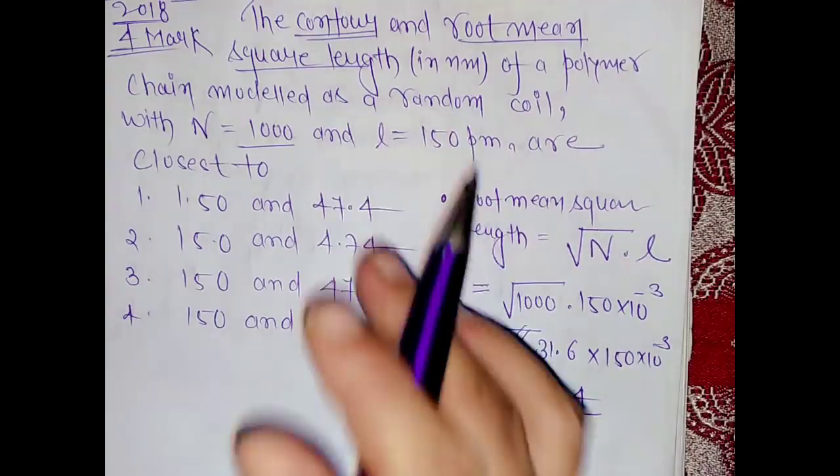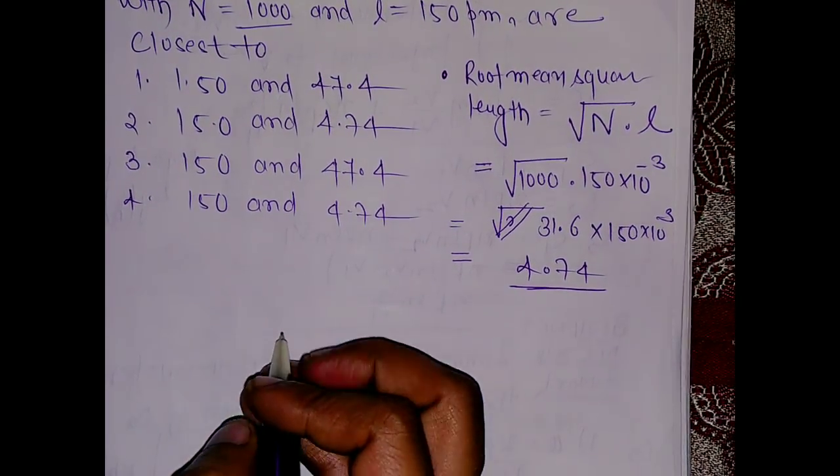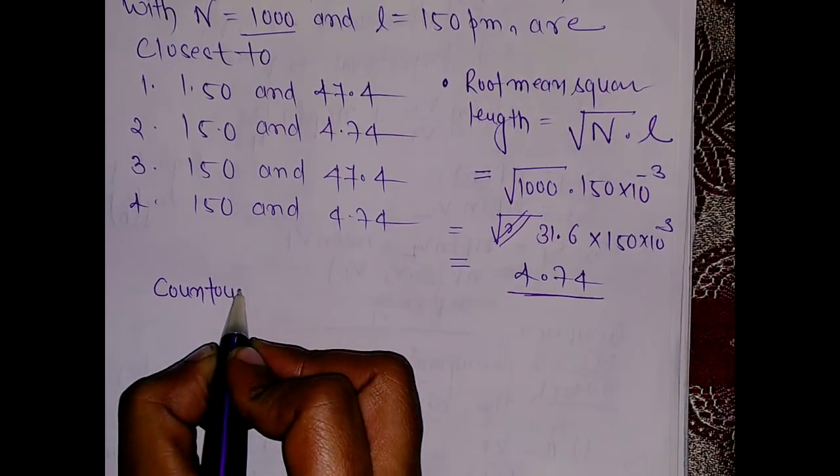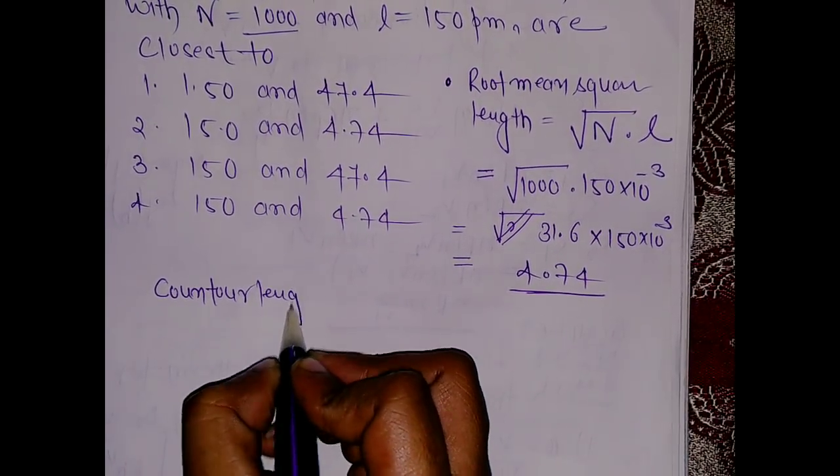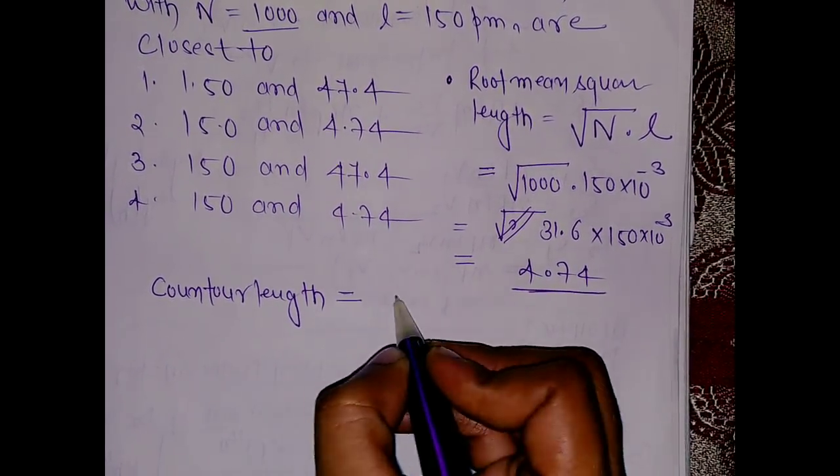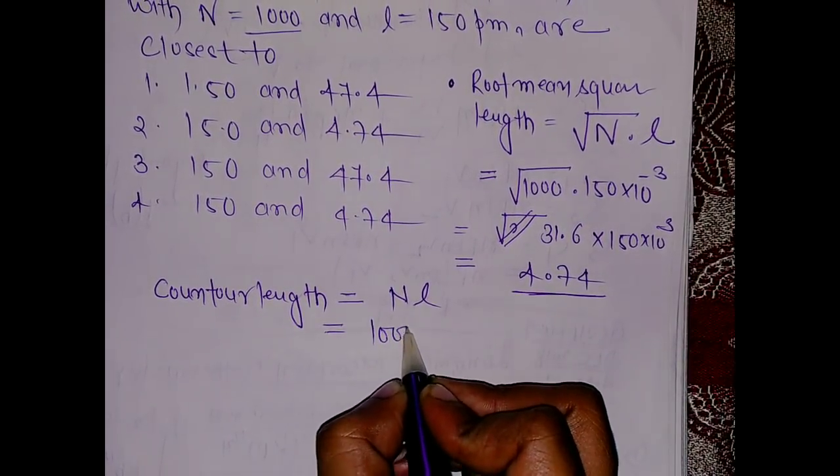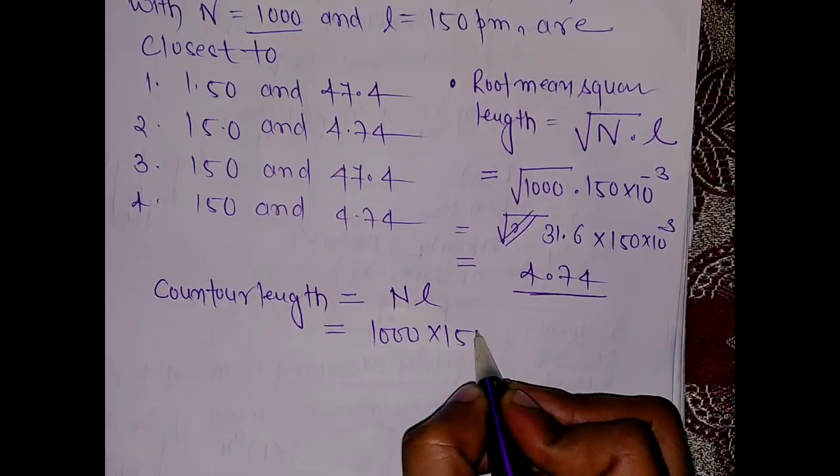The contour length is given by a very direct formula: N into L. So N is 1000 and length is 150 picometer.